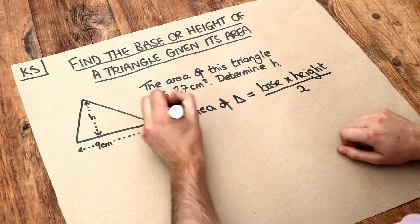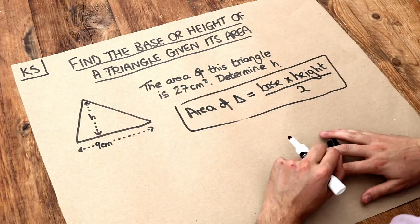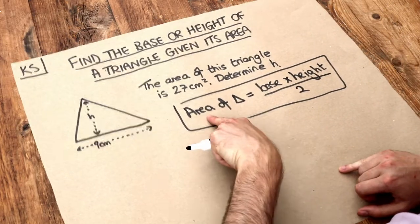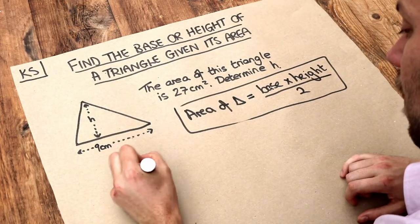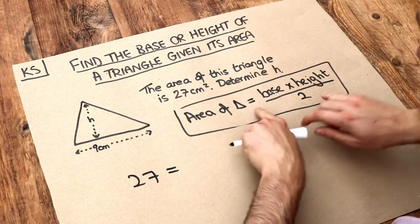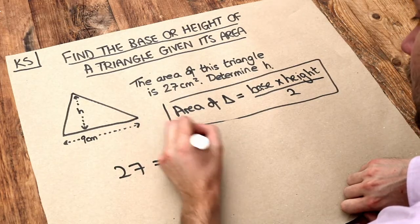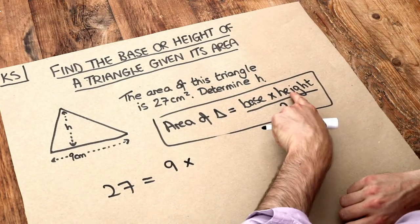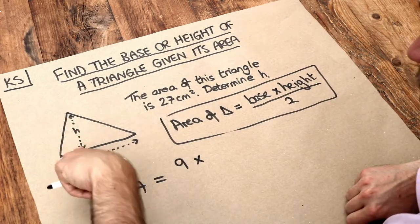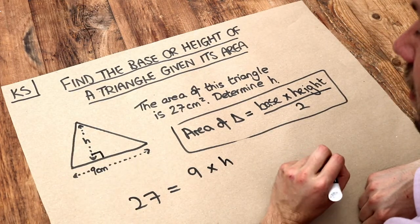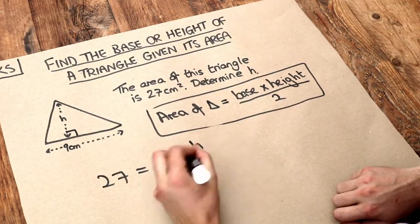Now let's use this formula to substitute what information we have in the question. We've got the area of the triangle, that's 27, and that is equal to the base of the triangle which we know is 9, multiplied by the height of the triangle which is h. Remember that height has to be at right angles to the base, and then we can see a divide by 2.